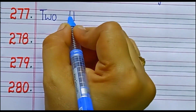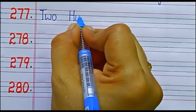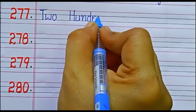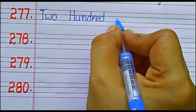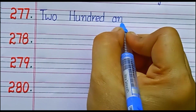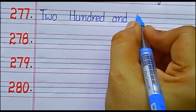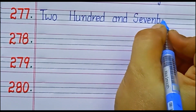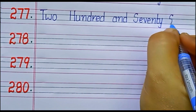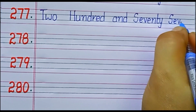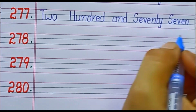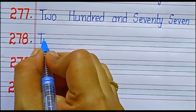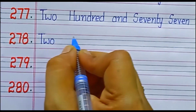277. S-E-V-E-N-T-Y, 70. S-E-V-E-N-T-Y, 7. 77. Two hundred seventy-seven.